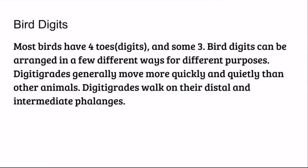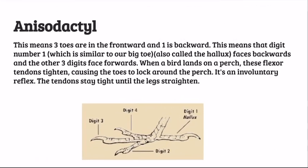Let's go to anisodactyl. This means three toes are in the front and one is in the back. Digit number one, similar to our big toe and also called the hallux, faces backwards while the other three digits face forward. These are mostly found in songbirds and perching birds, also known as passerines. When a bird lands on a perch, these flexor tendons tighten, causing the toes to lock around the perch.